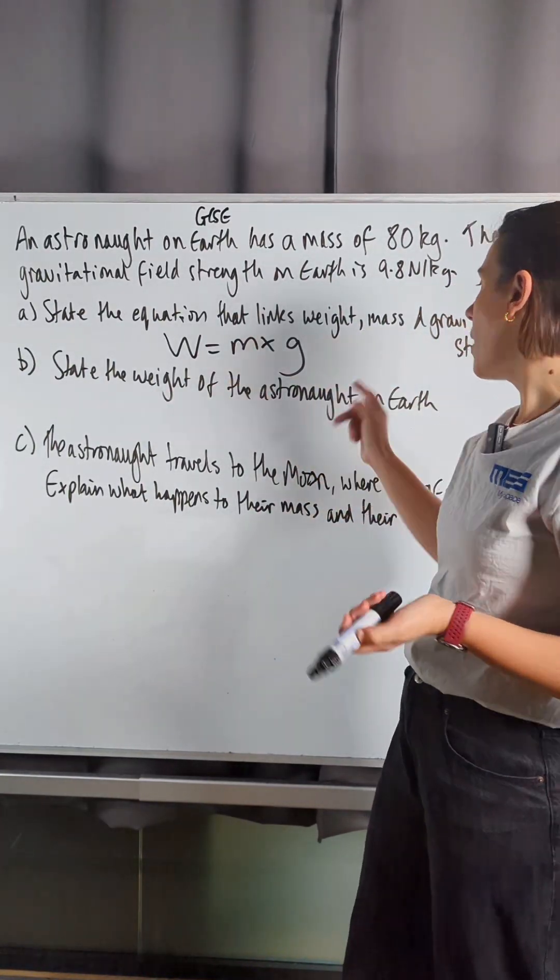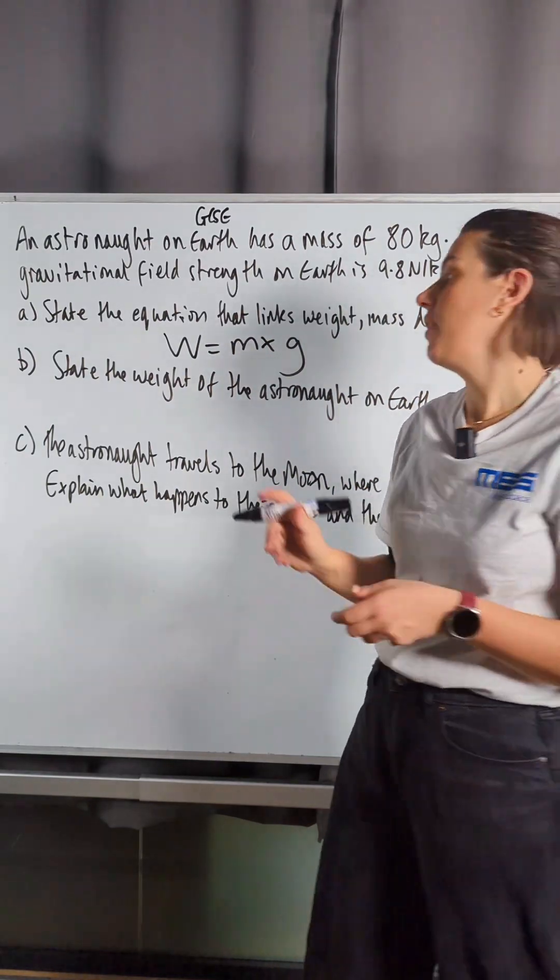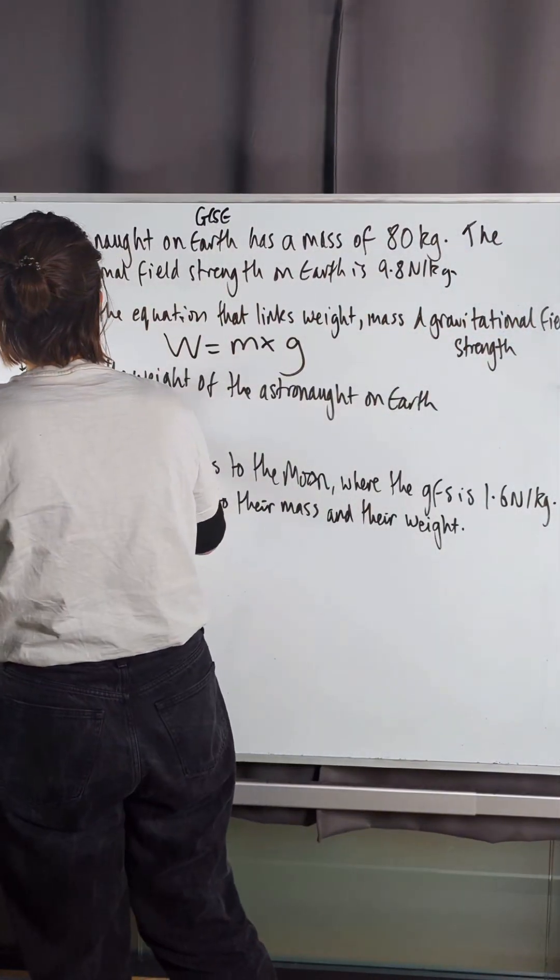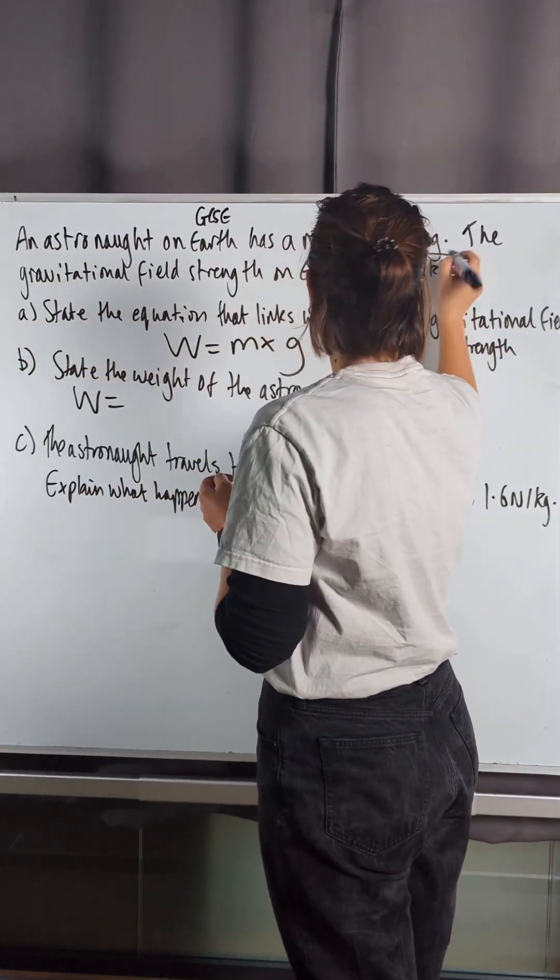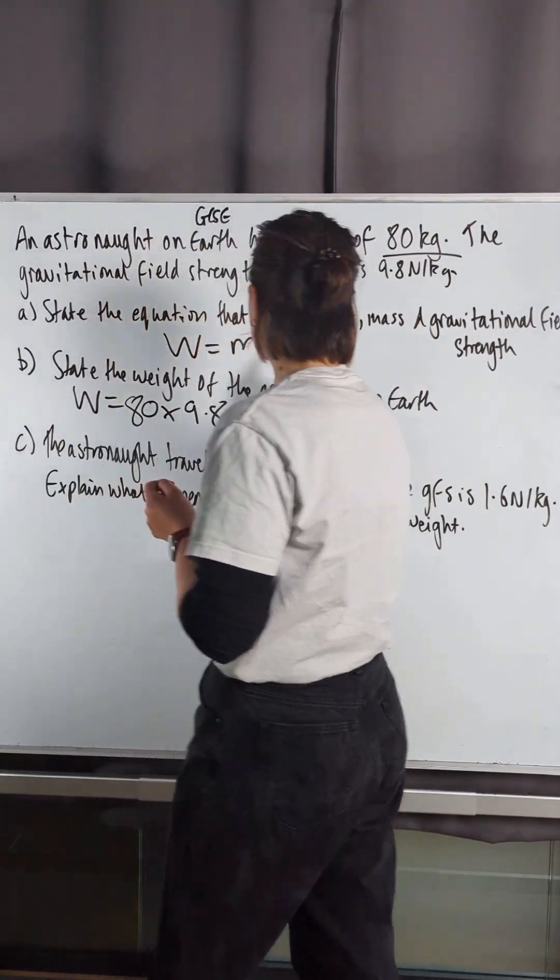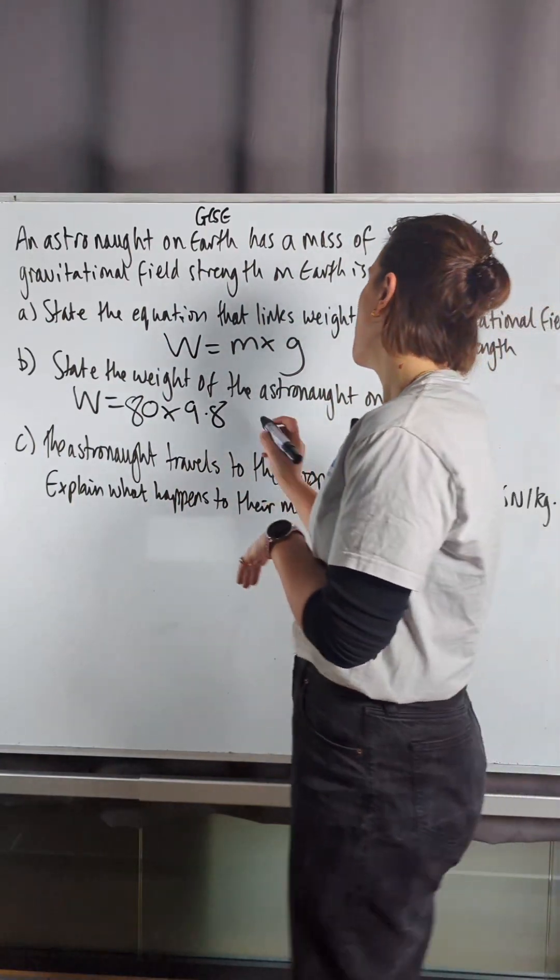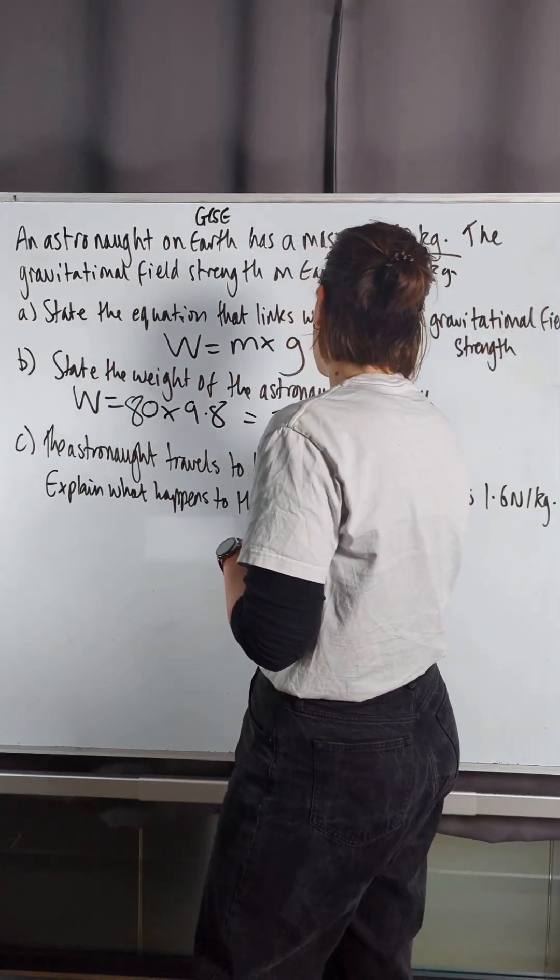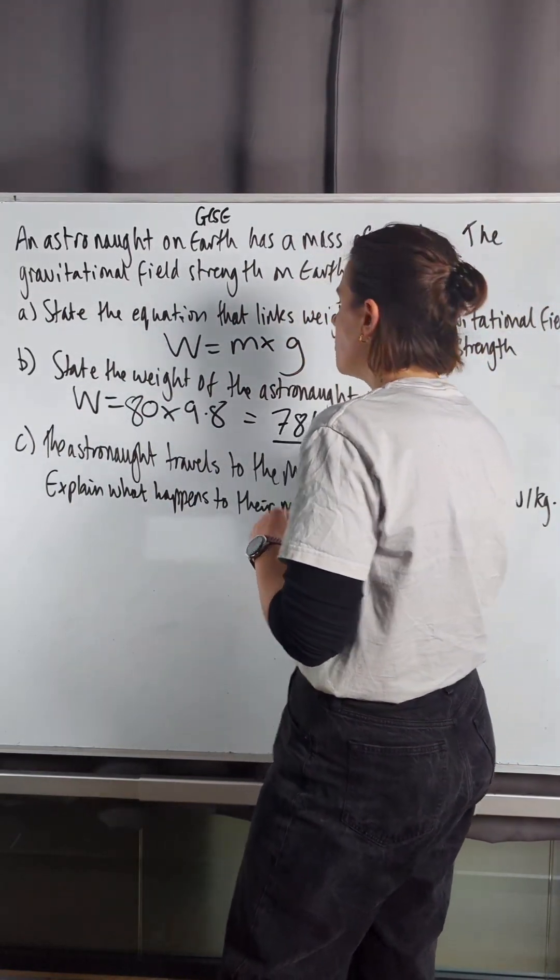Now, we need to next state the weight of the astronaut on the Earth. So, the weight is equal to the mass which is 80 kilos multiplied by 9.8 which is the gravitational field strength on Earth which gives us an answer of 784 newtons.